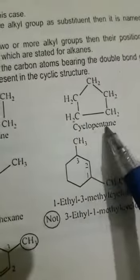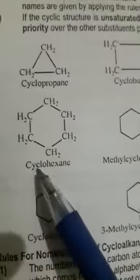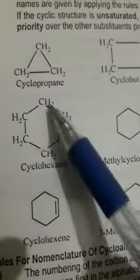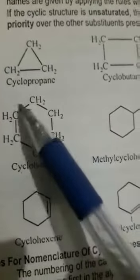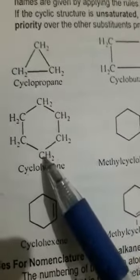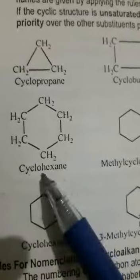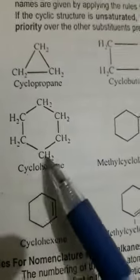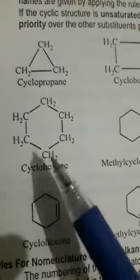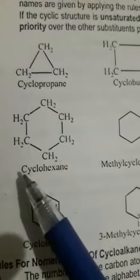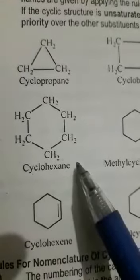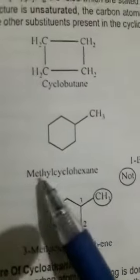Next example جس میں ہمارے پاس six carbons ہیں جو کہ ring form میں connected ہیں۔ Six carbon والی alkane hexane کہلاتی ہے اور اس سے پہلے prefix cyclo use کریں گے، اس کا name اس طرح سے ہوگا cyclohexane — جو کہ ایک ring structure ہے۔